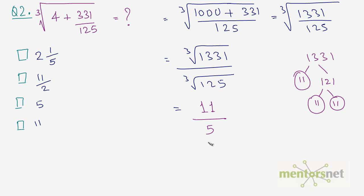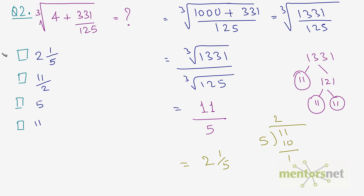So the answer is 11 over 5. Since no option appears as 11 over 5, we divide to express it as a mixed fraction: 5 goes into 11 twice with a remainder of 1, giving 2 and 1 over 5. So the answer is option A.